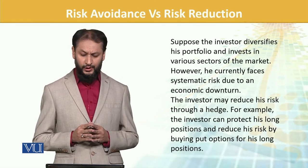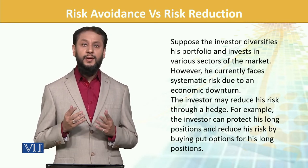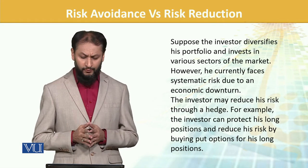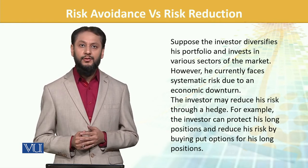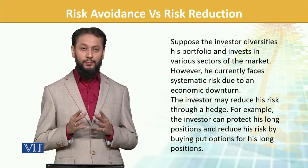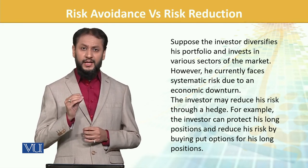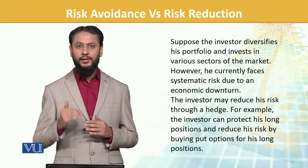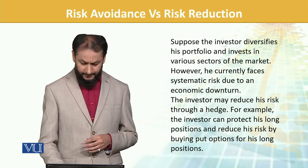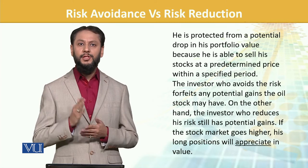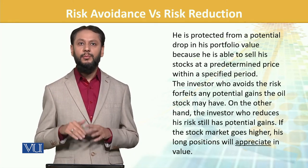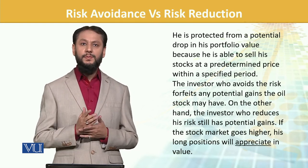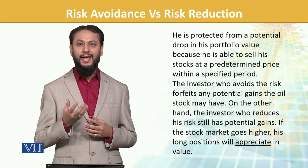Suppose an investor diversifies his portfolio and invests in various sectors. However, he currently faces systematic risk due to an economic downturn — agar puri economy buri ho jaati hai, to loss ho sakta hai. Ab investor apne risk ko hedge kar sakta hai. For example, the investor can protect his long position by buying put options. Agar price gir egi, to put option se benefit ho jayega — he is protected from a potential drop. Agar value giri to put option se benefit, agar price upar gayi to stock appreciation ka faida bhi hai. Downside ko capture kar liya — yeh hai risk management, risk hedging, aur risk reduction.